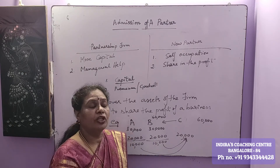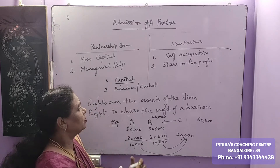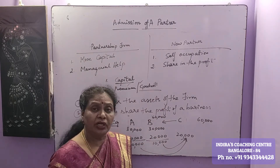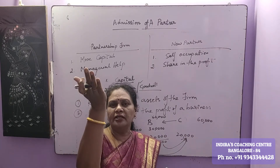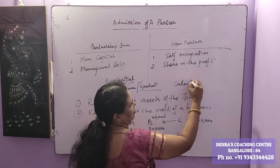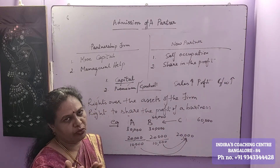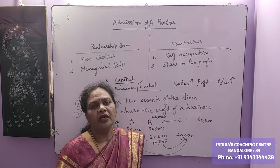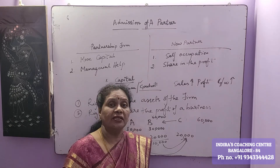If it is an established business the profit is going to be high, and if the new person is going to get a share in that profit he has to bring an extra amount which is called premium or goodwill. Goodwill is the good name or the reputation of the business. When a business has a good name, sales increase; when sales increase, profit also increases. So when the reputation of the business is more, or it is earning extra profits compared to the normal rate of return, that extra earning capacity is known as goodwill.